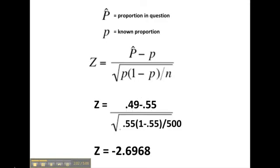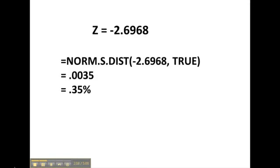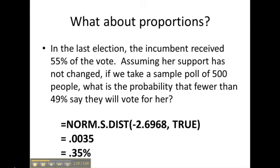Here, I've used the norm.s.dist formula to look up the Z value, and I get an answer of .0035, or .35%. So let's take a look at how we interpret that if we go back to the original problem.